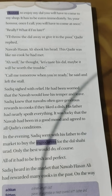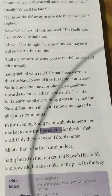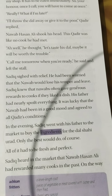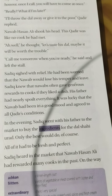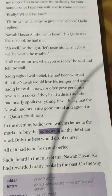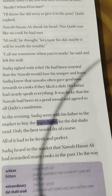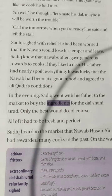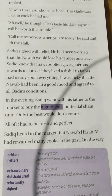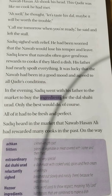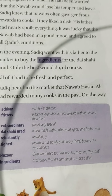Sadiq sighed with relief. He had been worried that the Nabab would lose his temper and leave, for Sadiq knew that Nababs often gave generous rewards to cooks if they liked their dishes. His father had nearly spoiled everything. It was lucky that the Nabab had been in a good mood and agreed to all Kwadar's conditions. In the evening, Sadiq went with his father to the market to buy the ingredients for the dal sahi urad. Only the best would do. Children, ingredients means substances that are combined to make a dish.